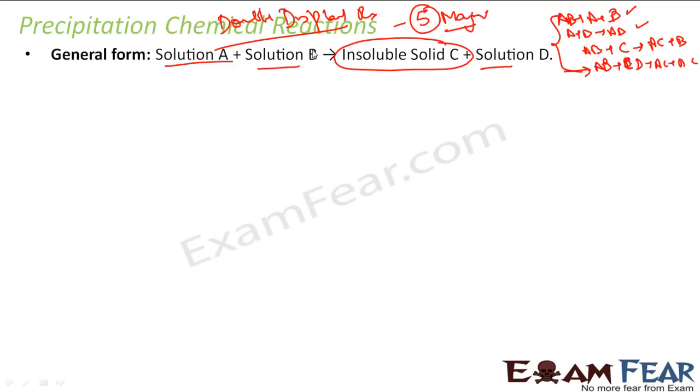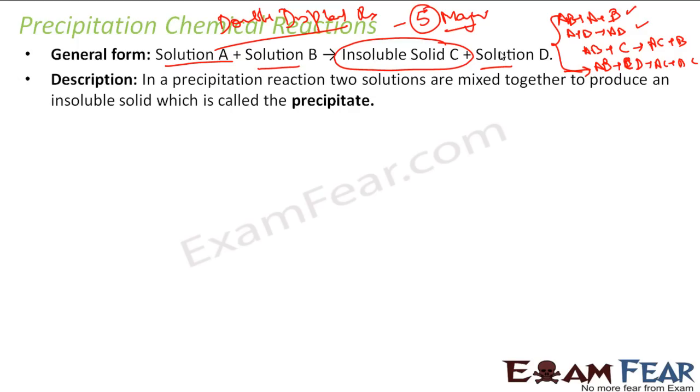Where you have two solutions you mix, you get one insoluble substance that precipitates in solution. The chemistry description says that in this precipitation reaction, two solutions are mixed together, forming an insoluble solid which is the precipitate. It's a type of double displacement reaction.